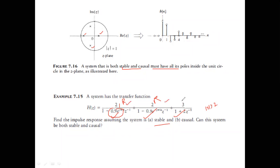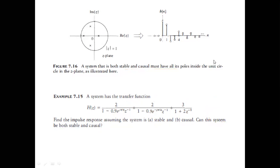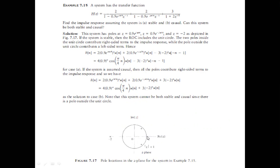If you want the system to be causal, all components must be right-sided, making the collective ROC |z| > 2, which does not include the unit circle. So if you make it causal, it cannot be stable. Simply explained by poles: for a causal and stable system all poles must be inside the unit circle, but here one pole is at 2 — outside. So this system cannot be both stable and causal.